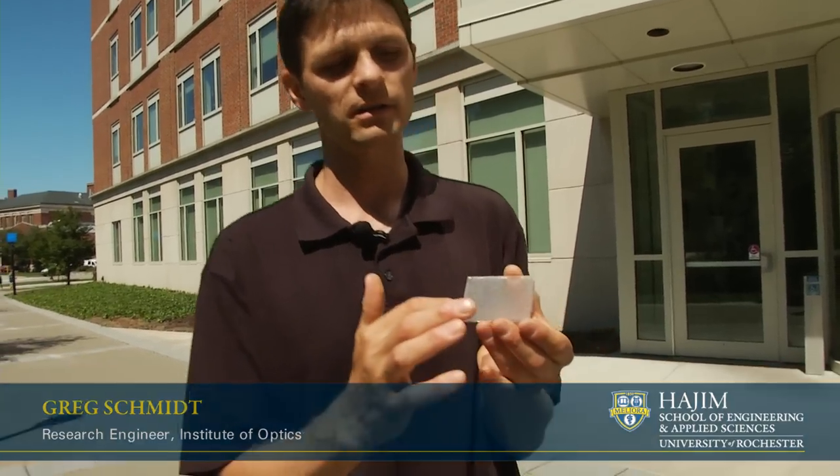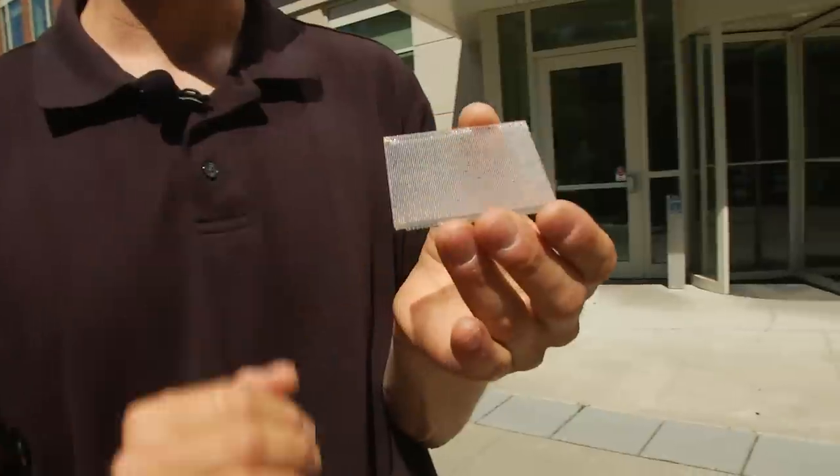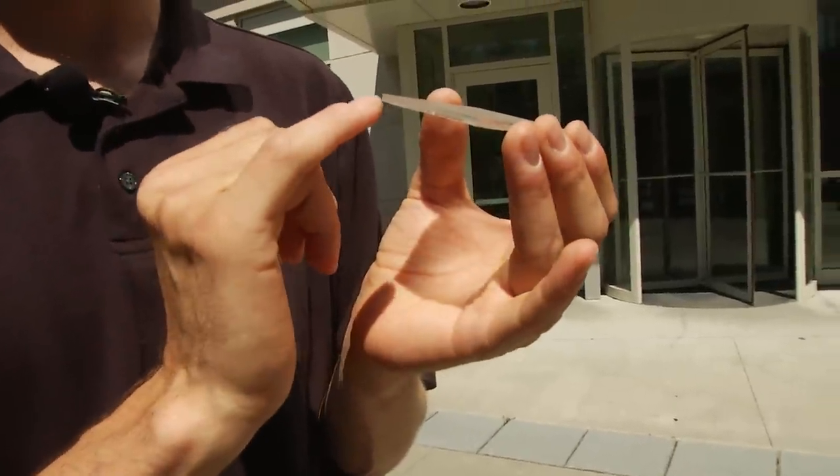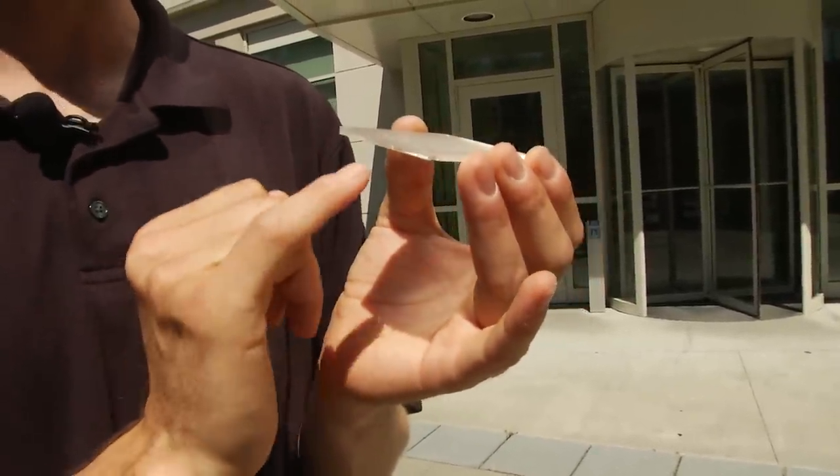Our group has developed light guide solar concentrators. These work by collecting the solar incident light on this surface and concentrating it all to come out along a single edge of the device.